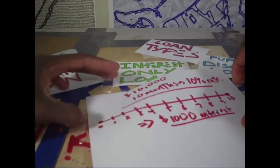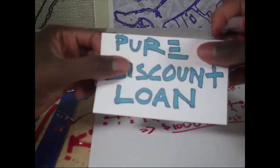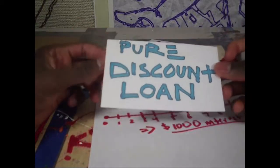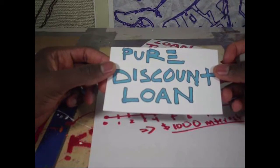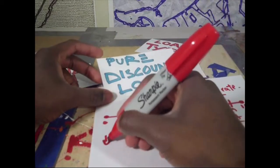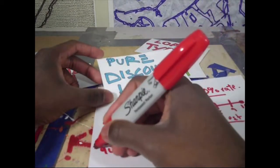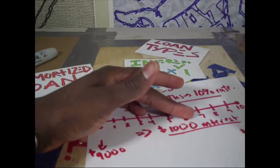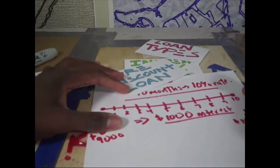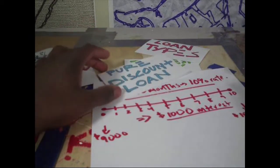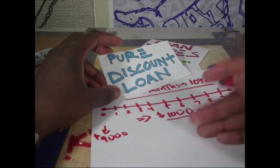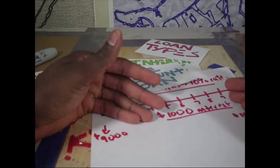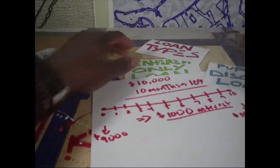For a pure discount loan, all you would do is purchase a document — a bill, an agreement — for nine thousand dollars in the very beginning, and at the end of ten months the borrower must give you ten thousand dollars. So you pay nine thousand dollars but you get back ten thousand dollars — that's how it works if you're the person lending the money.